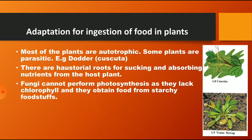The next adaptation is for ingestion of food in plants. Most plants are autotrophic, but some plants are parasitic. An example is dodder, that is Cuscuta — it is a parasitic plant with haustorial roots for sucking and absorbing nutrients from the host plant.